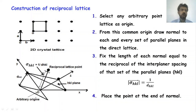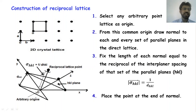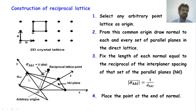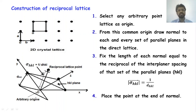You have to terminate this normal at the point where you get the distance equal to the reciprocal of the interplanar distance between the two planes. That point is known as the reciprocal lattice point. So we get σ_hkl = 1 / d_hkl, where σ is known as the reciprocal lattice vector and d_hkl is the distance between the two planes. Place the point at the end of the normal — this point where the normal terminates is known as the reciprocal lattice point.